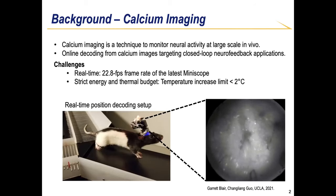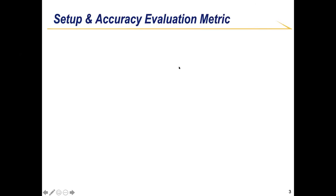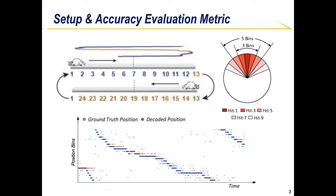The two most significant challenges for online decoding are real-time processing and power constraints. During experiments, a rat carrying a behavioral camera freely runs on a linear track. The camera records the rat's position, which is divided into 24 evenly distributed position bins. We employ a dedicated accuracy metric called Hit-K, which reflects the probability that the decoded position falls into the K nearest bins around the ground truth position, mapped on a circle.